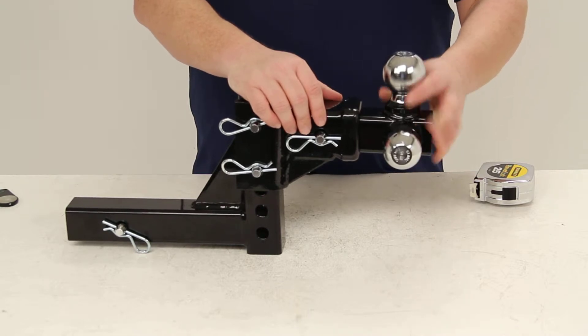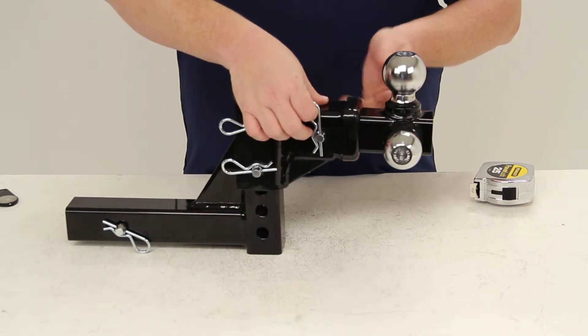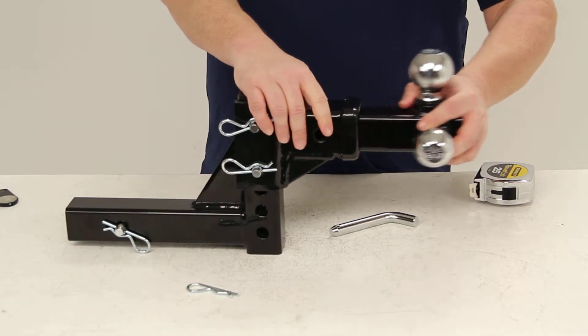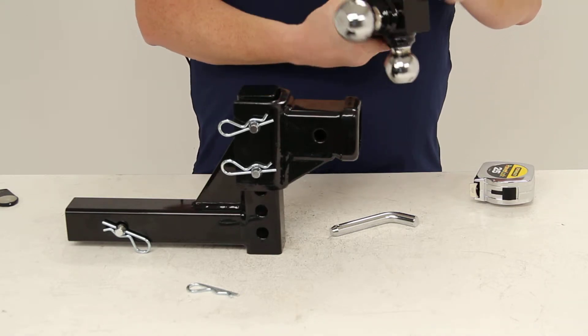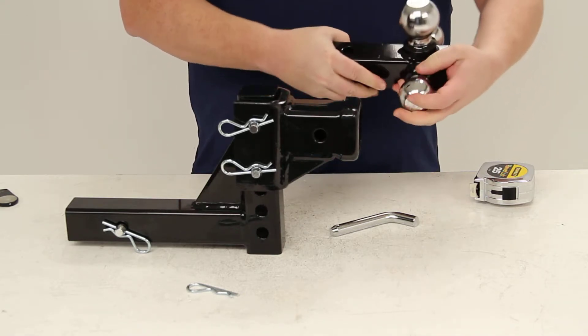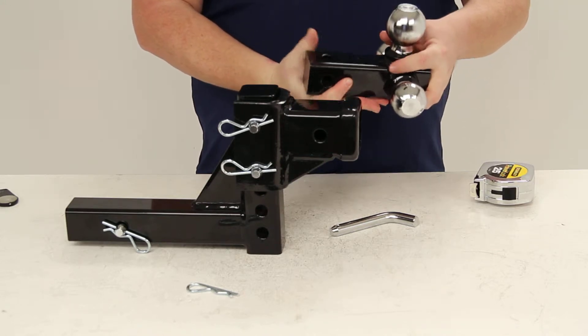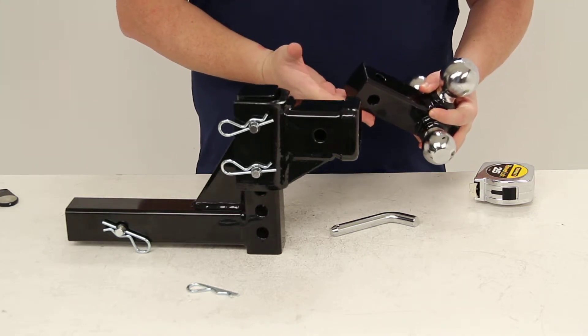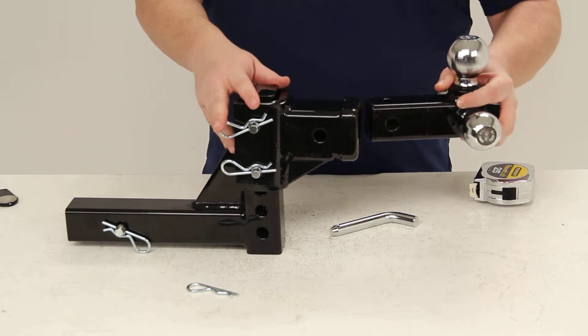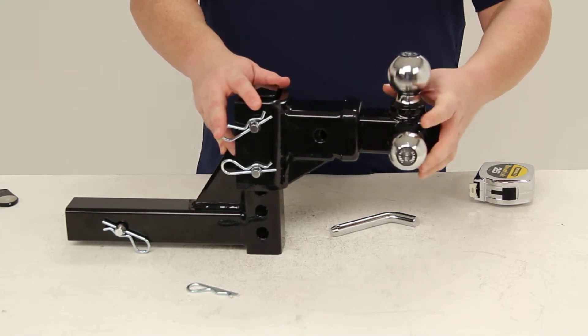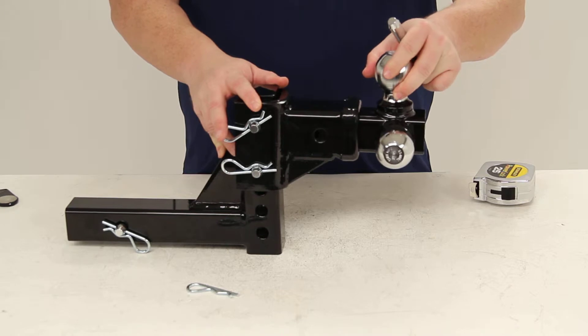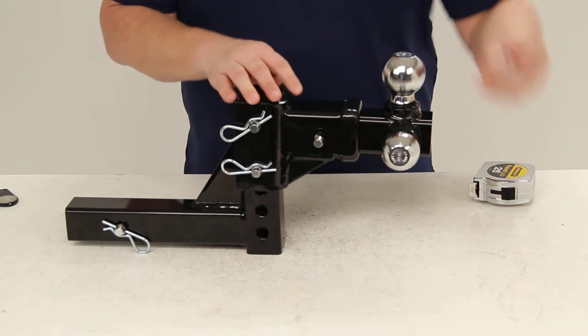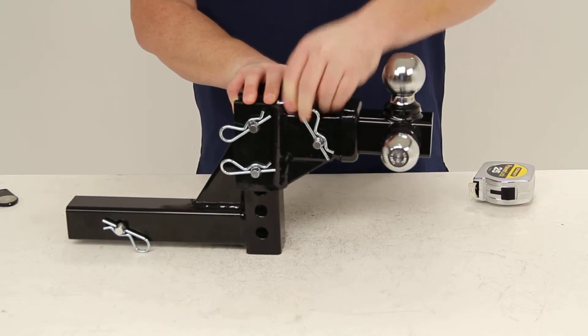It has a welded steel construction with a chrome finish, and it's really easy to change your ball here. Comes in three sizes: the one and seven-eighths, the two-inch, and the two and five-sixteenth inches. Each ball has its own towing capacity—we'll get into that in just a second. Really easy to lock that back into place: just match up your hole there, put the pin in, and lock that back up.